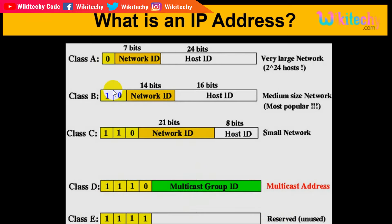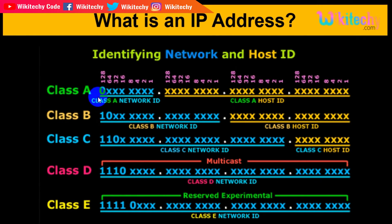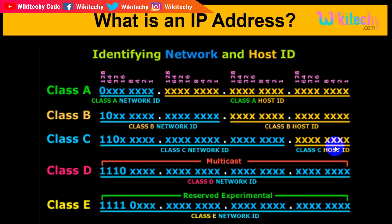Class E is used by research agencies like ISRO and NASA. So this is how the IP address is classified. Class A has the first part as network ID and the rest as host ID. Class B has a larger network ID portion. Class D's entire address is used for multicasting, and Class E is for research purposes.